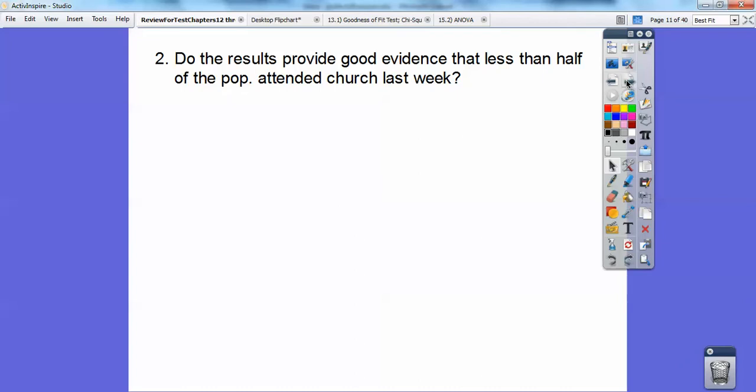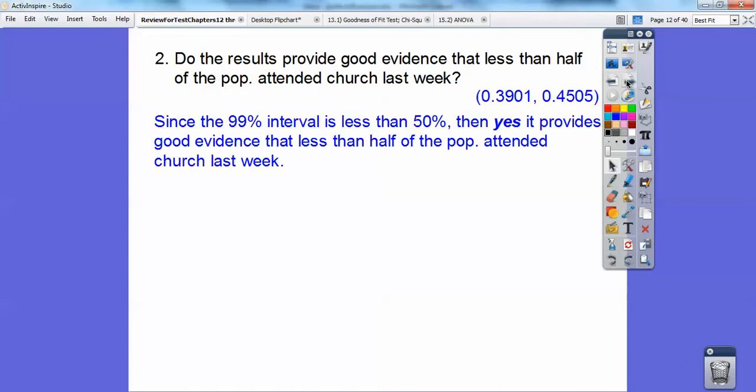So does this result provide good evidence that less than half of the population attended church? Well, since this is my 99% confidence interval, that's less than half, 50% somewhere above that confidence interval. So since the 99% interval is less than the 50%, then absolutely, yes, it provides good evidence that less than half the population attended church last week.